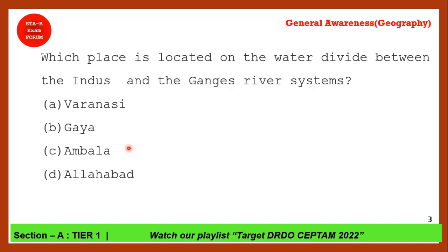Next question: Which place is located on the water divide between the Indus and Ganga river systems? This is a tricky question. The correct answer is option C — Ambala. Ambala is located between the Indus and Ganga river systems.